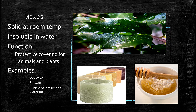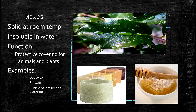We also have waxes. Waxes are typically solid at room temperature and insoluble in water. They can be found in nature and can also be produced in a laboratory. In nature, waxes are found as a covering on plants to prevent dehydration of the leaves. When it is very hot and sunny, water content in leaves can be lost through the stomata and guard cells, causing wilting. To prevent this, plants develop a waxy layer on their leaves to prevent transpiration or evaporation of water. Examples include beeswax, earwax, and the cuticle of a leaf.